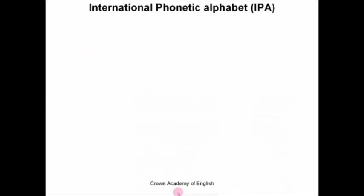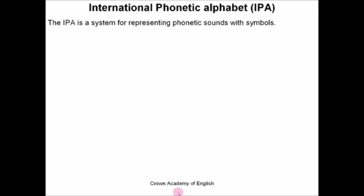So what is the International Phonetic Alphabet? Well, the IPA is a system for representing phonetic sounds with symbols. It helps us to pronounce a word correctly.